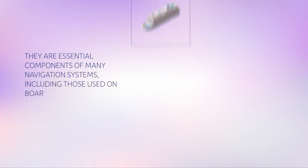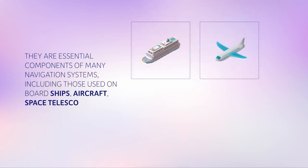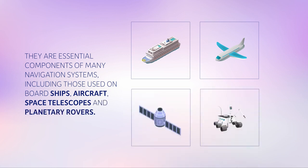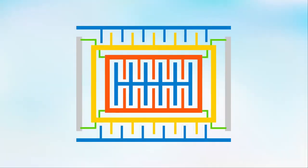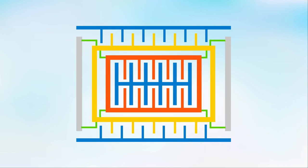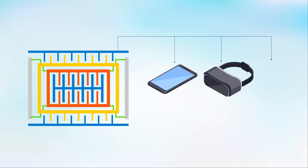Gyroscopes are used in navigation systems on board ships, aircraft, space telescopes, and planetary rovers. Today, many gyroscopes are based on microscopic vibrating mechanical elements integrated into electrical components. Such MEMS gyroscopes are used as motion sensors in smartphones, virtual reality headsets, and wearable fitness trackers.